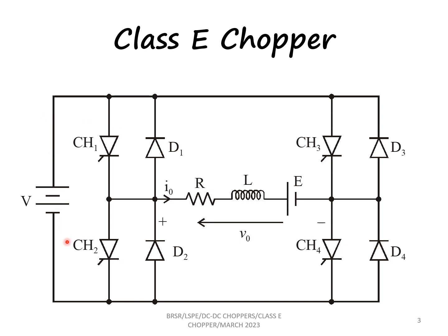The class E chopper consists of 4 choppers CH1, CH2, CH3, and CH4, and there are 4 diodes D1, D2, D3, D4, along with a load. When first quadrant operation is required, CH1 is operated. For second quadrant operation, CH2 is operated. For third quadrant operation, CH3 is operated, and for fourth quadrant operation, CH4 is operated.